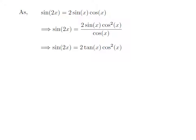As, sin(x) divided by cos(x) is equal to tan(x). So, sin(2x) is equal to 2 times tan(x) times cos²(x).